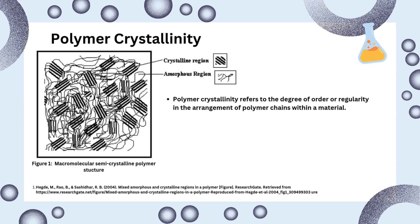Polymer crystallinity refers to the degree of order in the arrangement of polymer chains. Most polymers are semi-crystalline, meaning they contain both crystalline and amorphous regions, which together determine the material's properties.